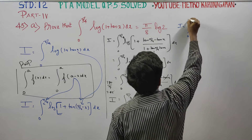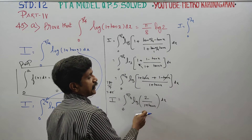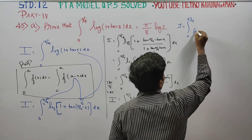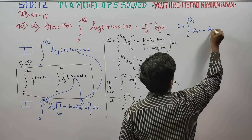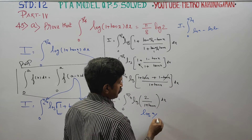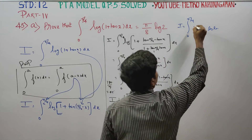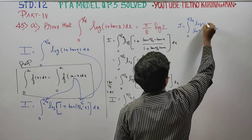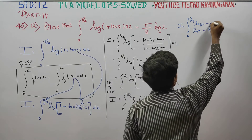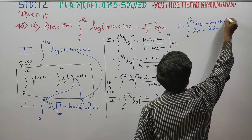Now apply the logarithm property: log(a/b) = log a − log b. So I = ∫₀^(π/4) [log 2 − log(1 + tan x)] dx.